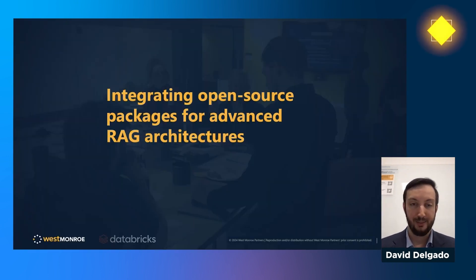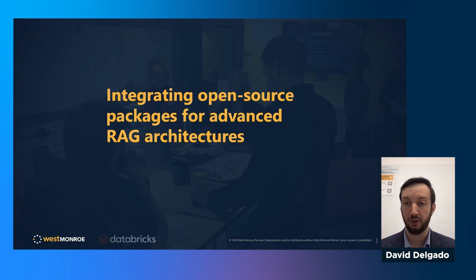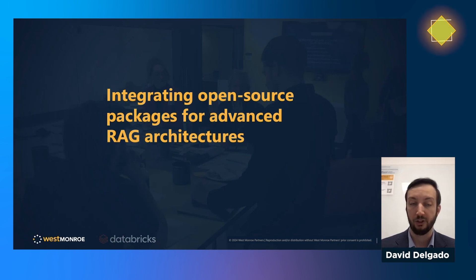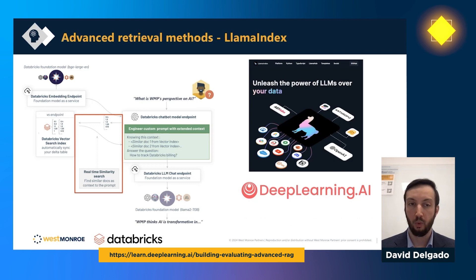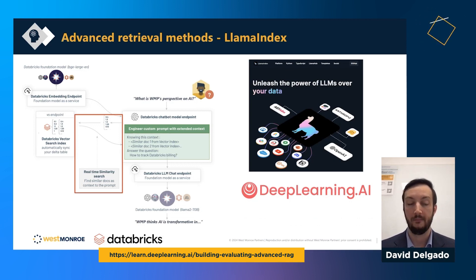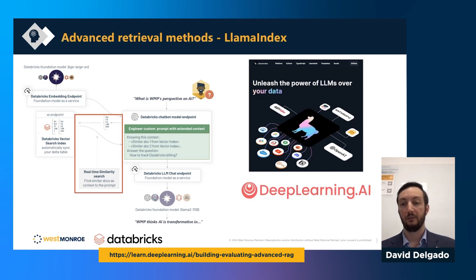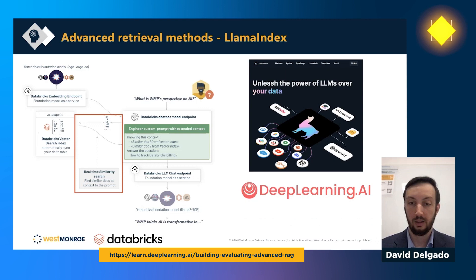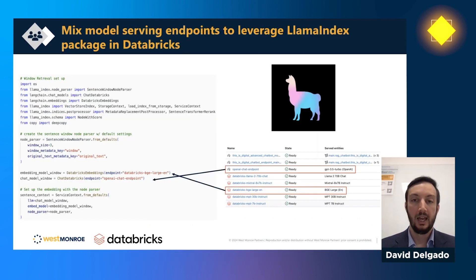While working through some code issues, I investigated more advanced RAG architectures. This section covers integrating open source packages for advanced RAG. We'll focus on the retrieval step — where we take a question and search the vector search index. In the previous part, we used real-time similarity search. Now we'll look at more advanced ways to search the database, following a DeepLearning.AI course called 'Building and Evaluating Advanced RAG Architectures Using LlamaIndex.' I highly recommend checking out that tutorial if you're interested in these advanced architectures.